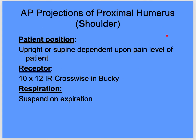For AP projections of the proximal shoulder and humerus, the patient is upright or supine depending on pain level. Use a 10 by 12 image receptor crosswise in the bucky, collimating to approximately 10 by 12 on your digital receptor. Suspend on expiration: take a deep breath in, blow it all the way out, don't breathe, don't move, then make the exposure.